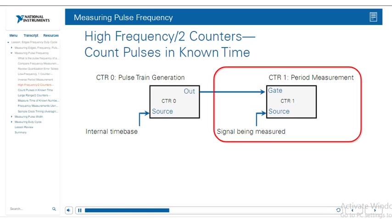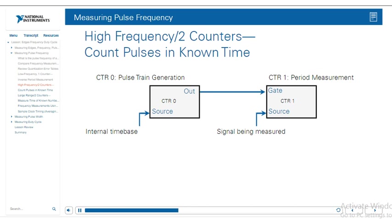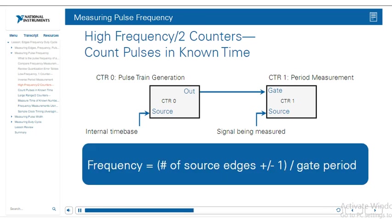Counter one performs the period measurement using an external signal as a source instead of an internal time base. Counter one's gate signal comes from the output of counter zero — that pulse train we generated. Since we know the frequency of counter zero's output, we know exactly the length of the gate cycle on counter one. Based on the number of source edges that arrive on counter one's source, we can deduce the frequency by dividing counter one's period measurement by the gate period.